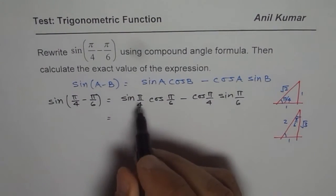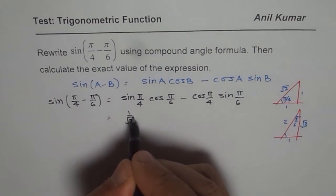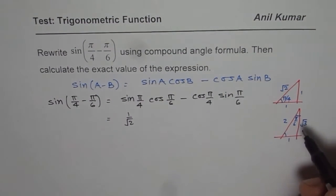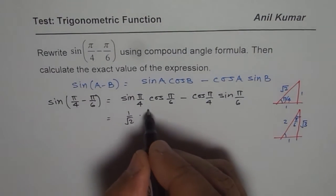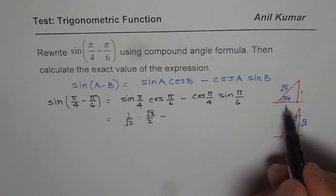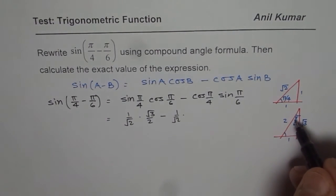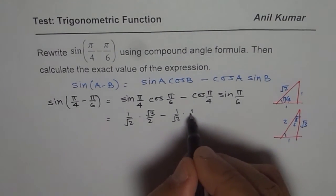Sin(π/4) is 1 over √2, cos(π/6) is √3 over 2, times √3 over 2, minus cos(π/4) is 1 over √2, sin(π/6) is the opposite side, so 1 over 2.